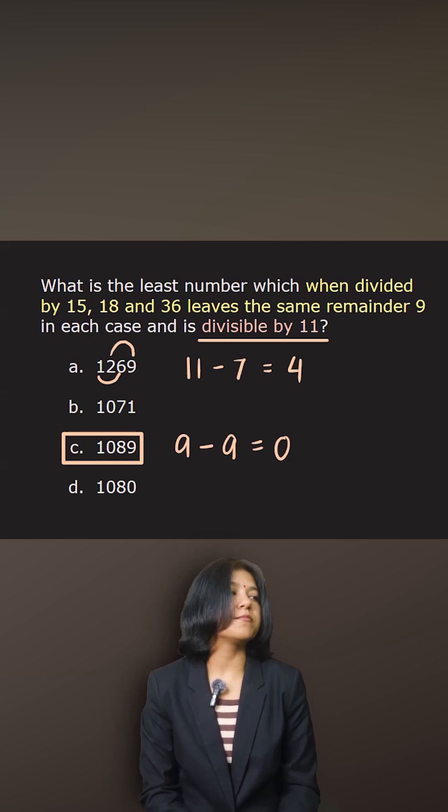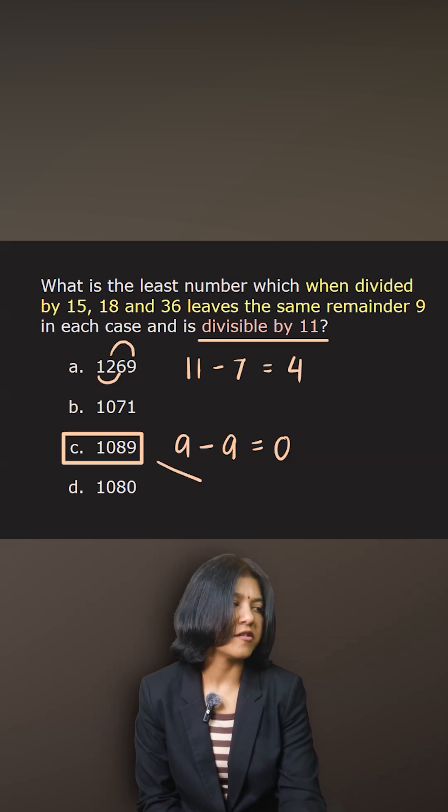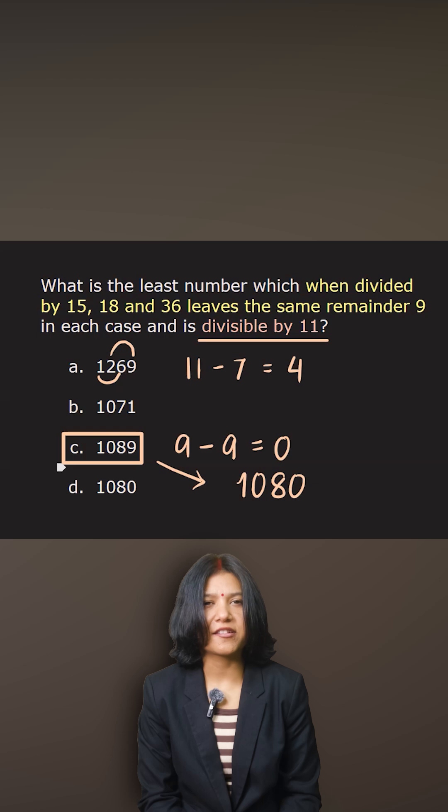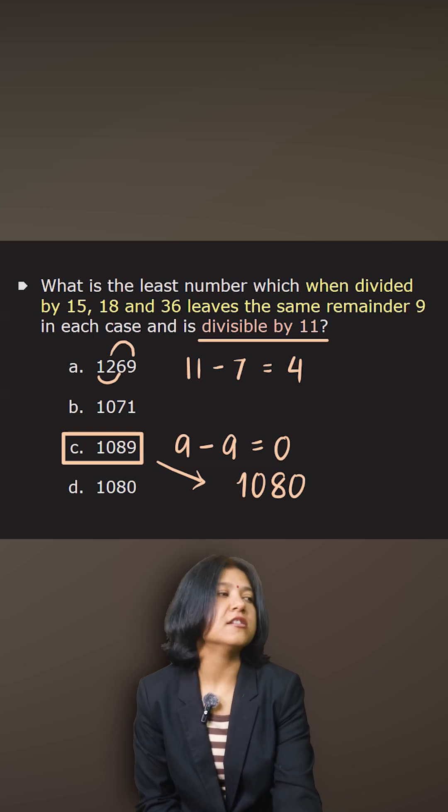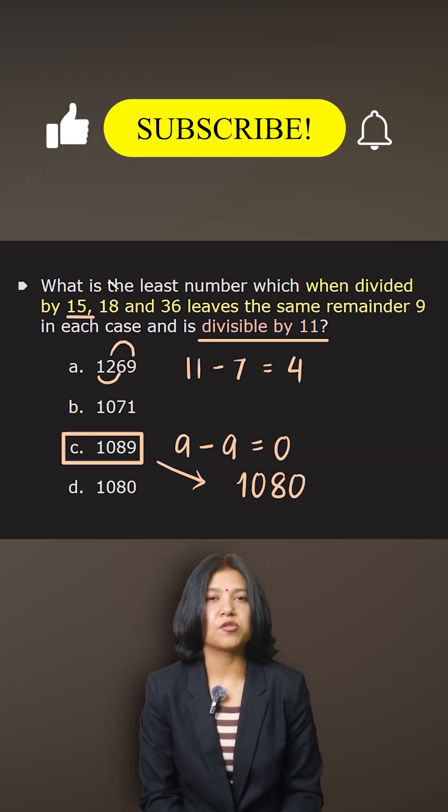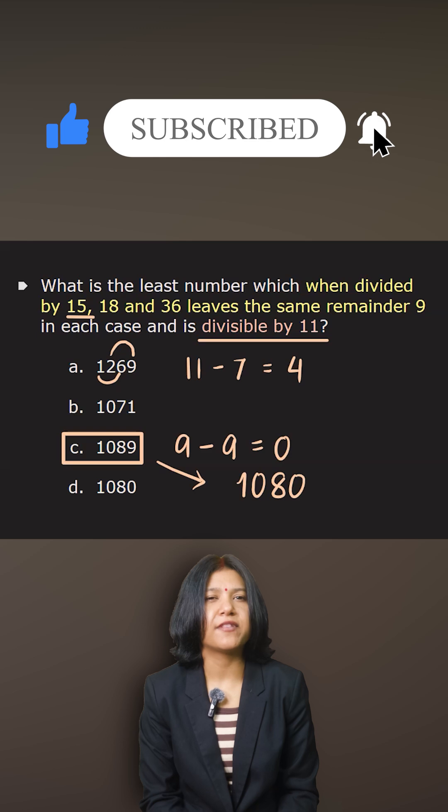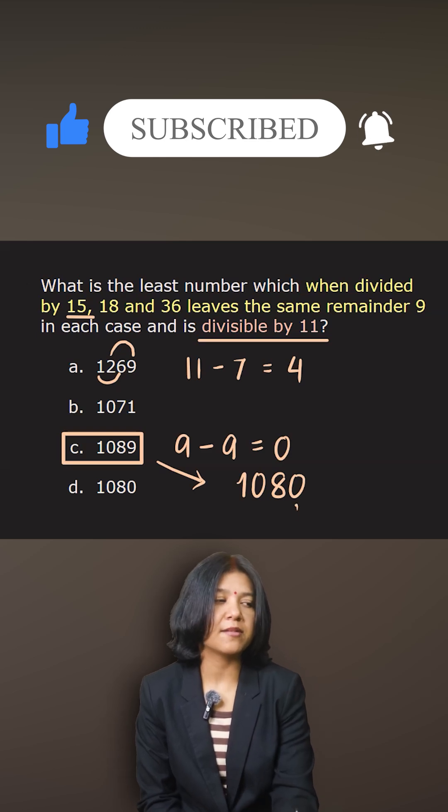Now you want to make sure that it leaves the same remainder 9, so you want to confirm: if you remove 9, the remainder, then the number formed is 1080. 1080 is divisible by 15 because 15 means you need a number to be divisible by both 5 and 3. So 5 will divide because of the 0, and the sum of digits here is a multiple of 3.